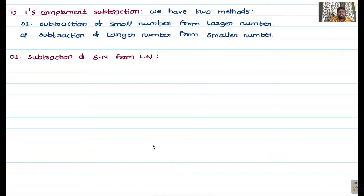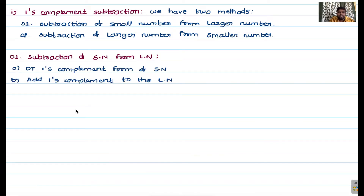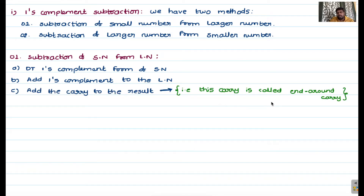For subtraction of a smaller number from a larger number, the first step is to determine the one's complement of the smaller number. The second step is to add this one's complement to the larger number. If a carry is generated, add that carry to the result. This carry is called the end-around carry.